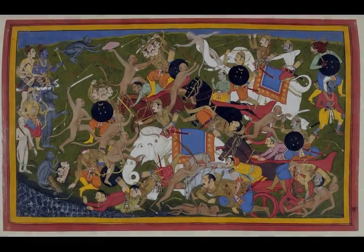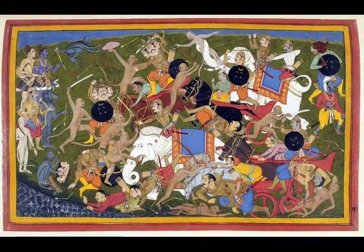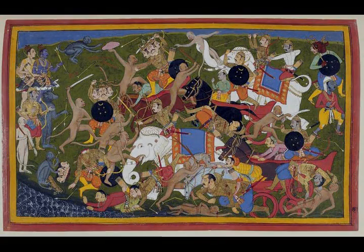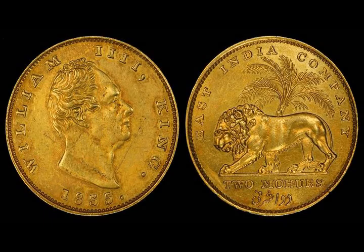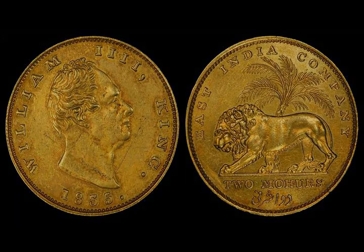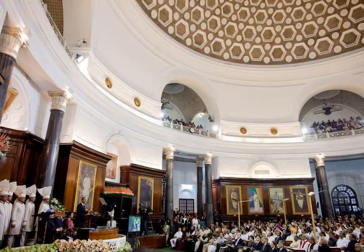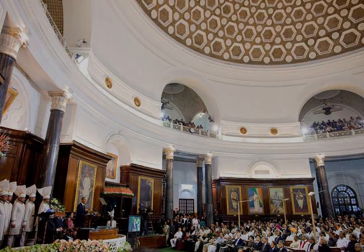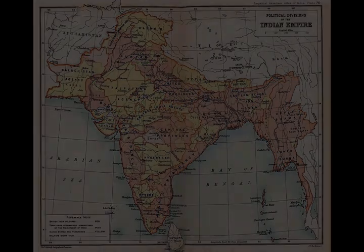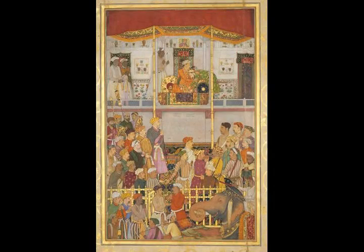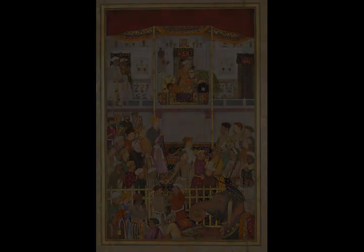The Indian early medieval age, from 600 to 1200 CE, is defined by regional kingdoms and cultural diversity. When Harsha of Kanauj, who ruled much of the Indo-Gangetic plain from 606 to 647 CE, attempted to expand southwards, he was defeated by the Chalukya ruler of the Deccan. When his successor attempted to expand eastwards, he was defeated by the Pala king of Bengal. When the Chalukyas attempted to expand southwards, they were defeated by the Pallavas, who in turn were opposed by the Pandyas and the Cholas. No ruler of this period was able to create an empire and consistently control lands much beyond their core region.